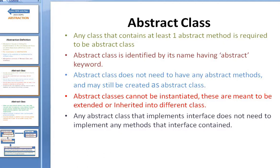If you have an abstract class that contains any abstract method, those methods do not have any body — it is just the declaration, not defined. So somebody has to come and override these methods to define what they are trying to do. That can only happen when you go outside of this class and somebody needs to extend this class.